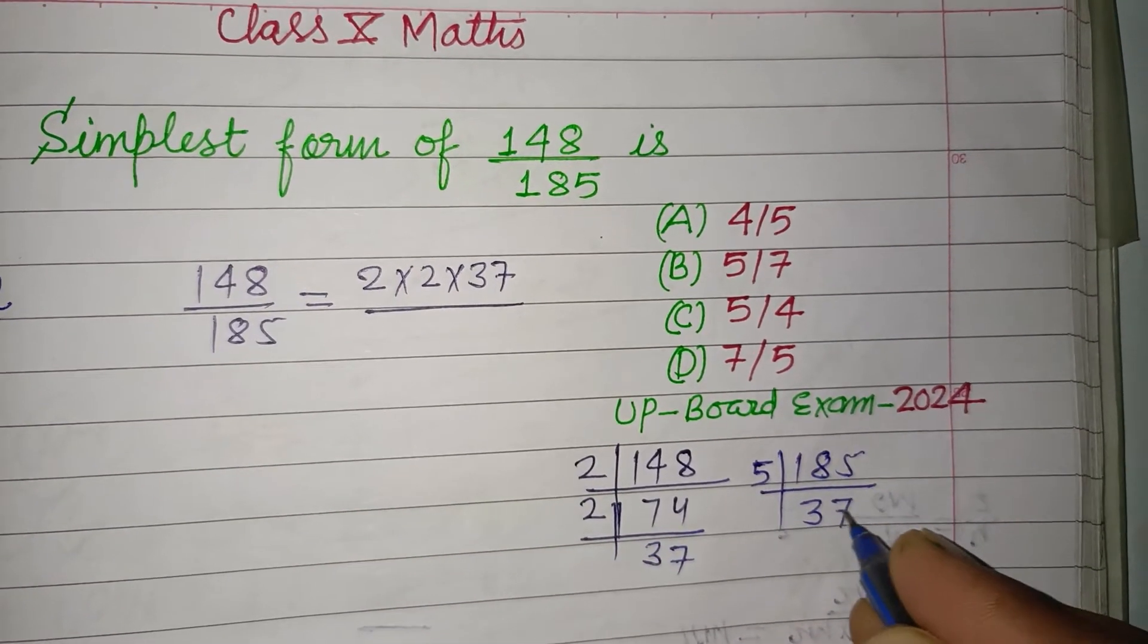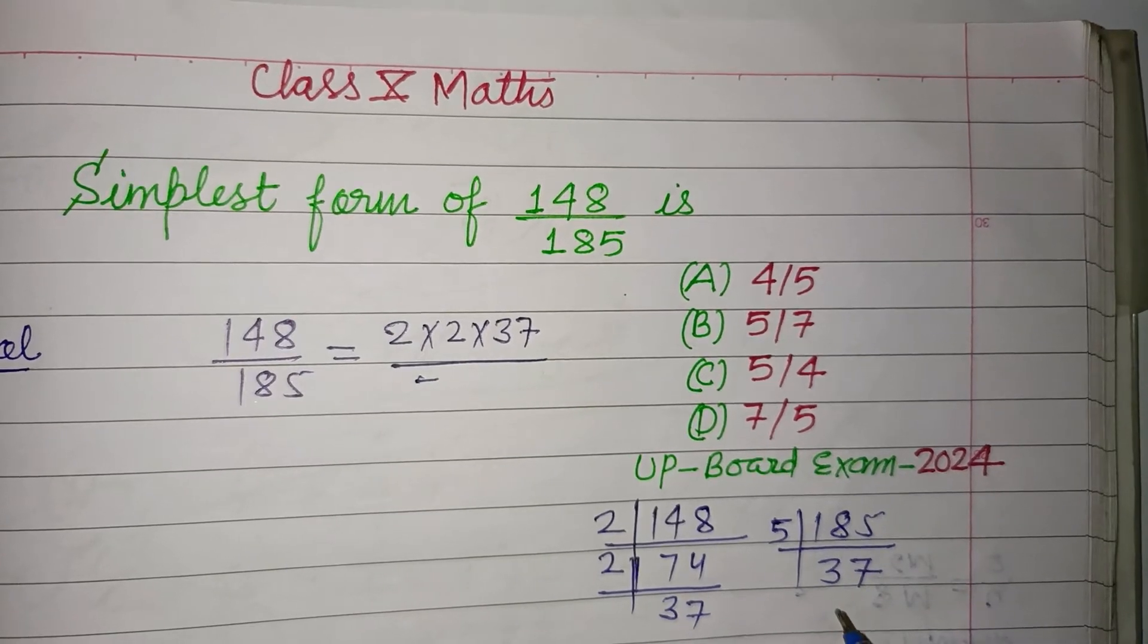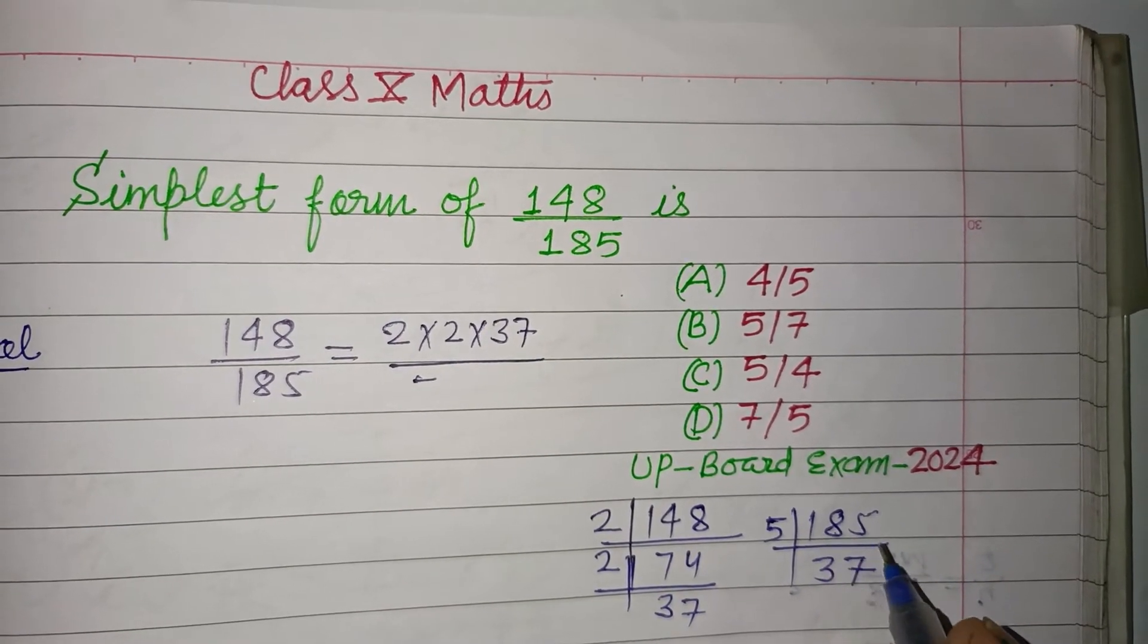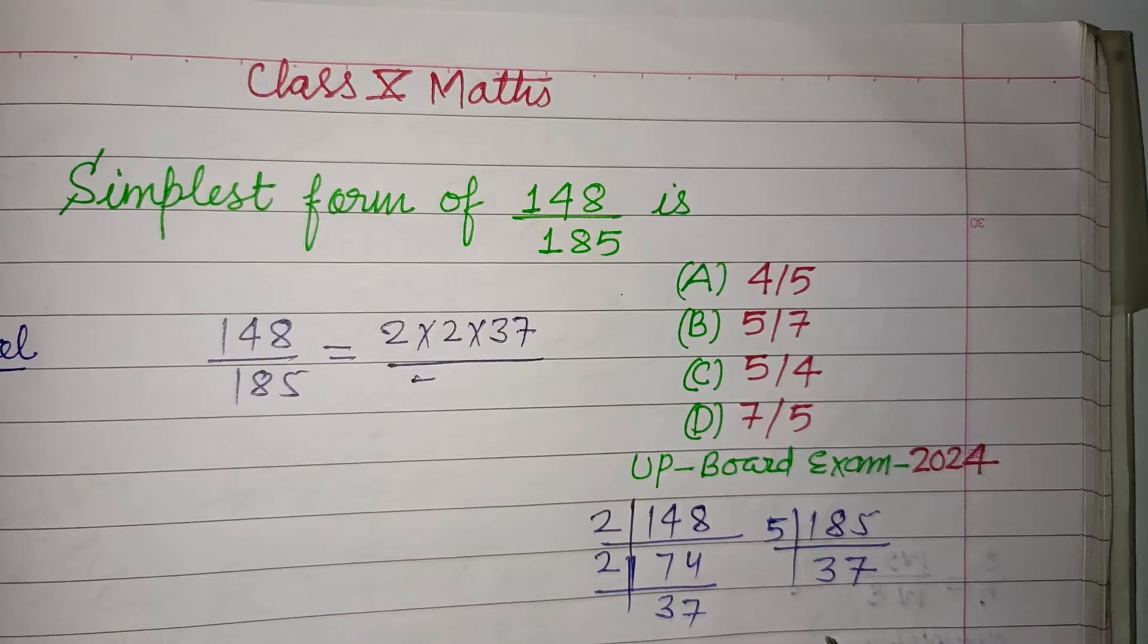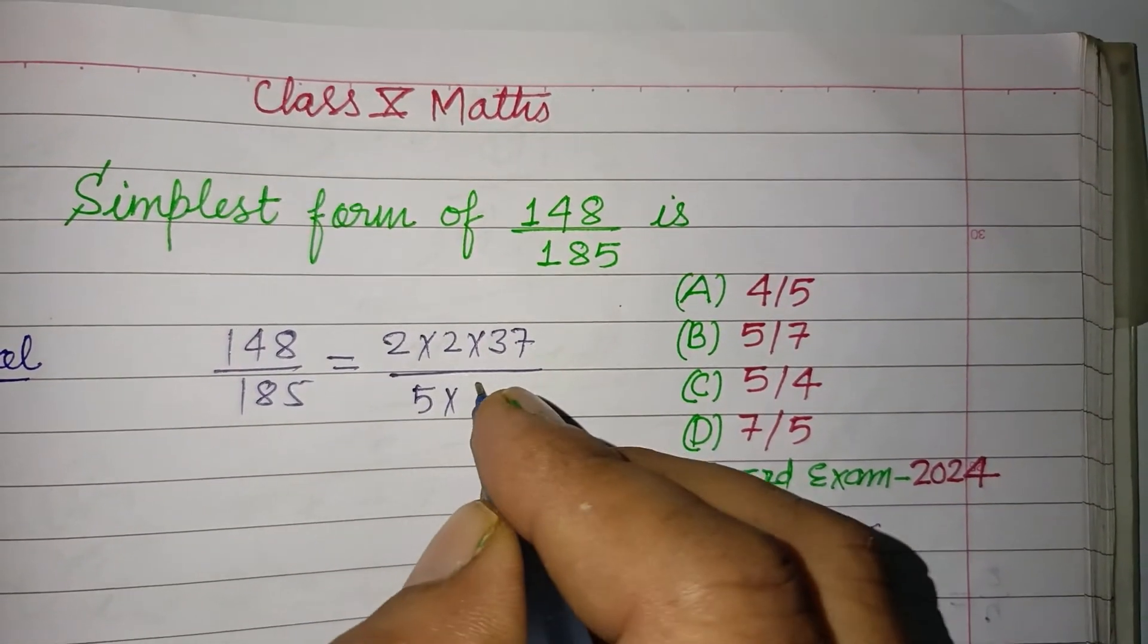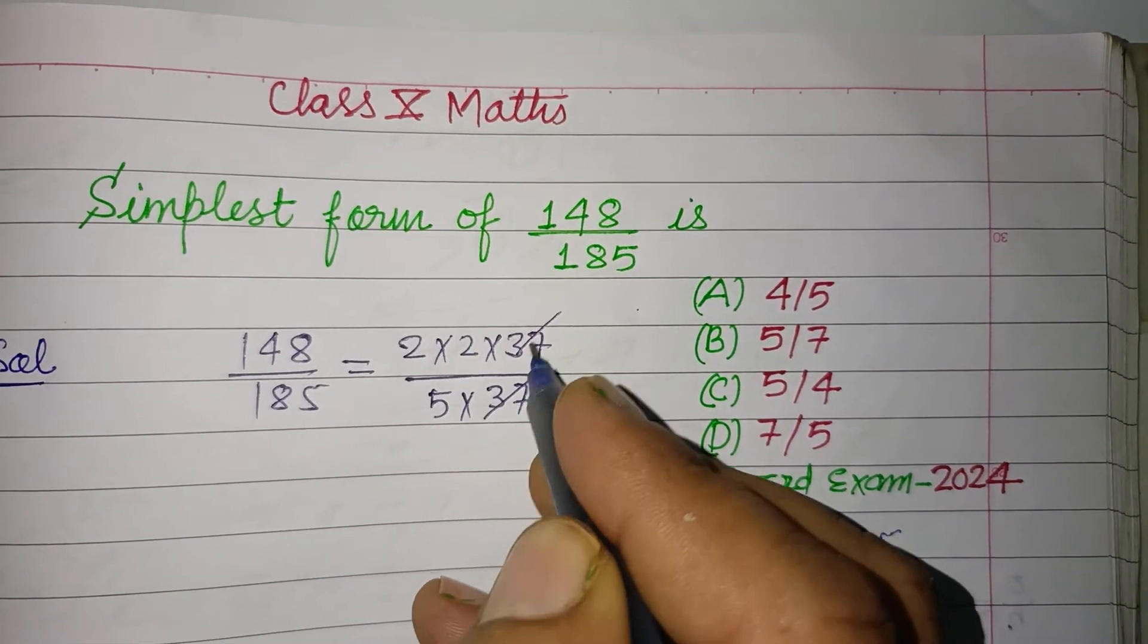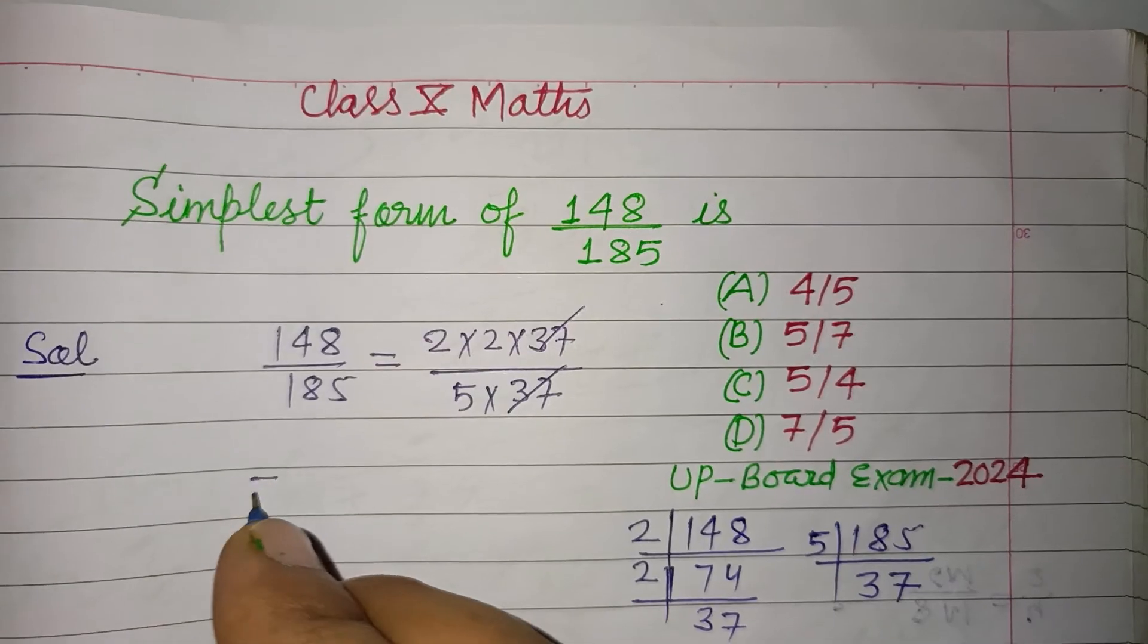So this is 5 times 37 are the factors of 185. Now, 37 is common in both factorizations, so we remove this common factor from numerator and denominator.